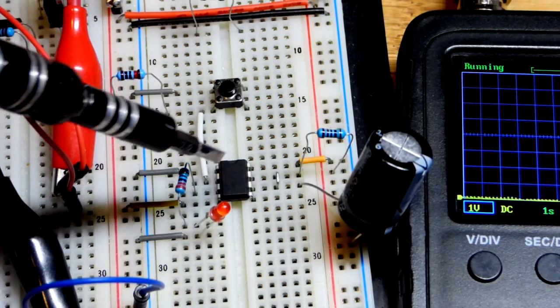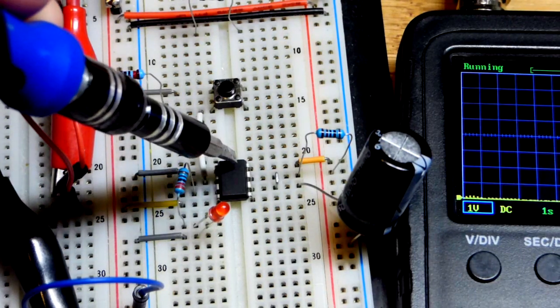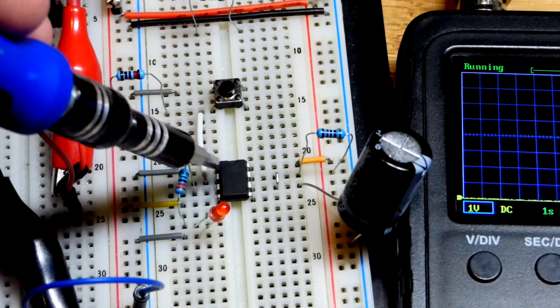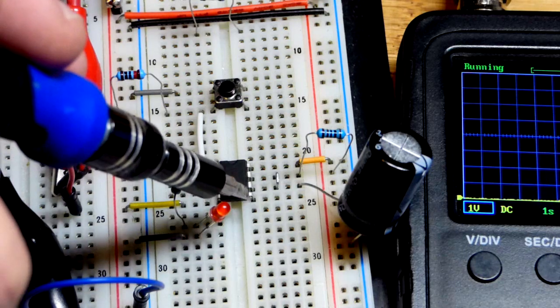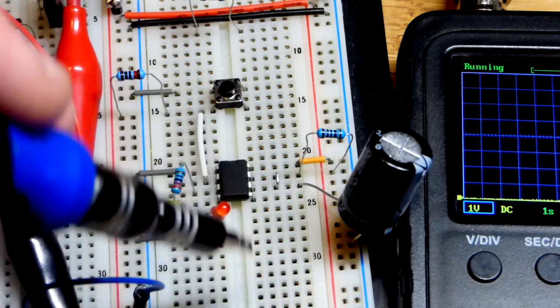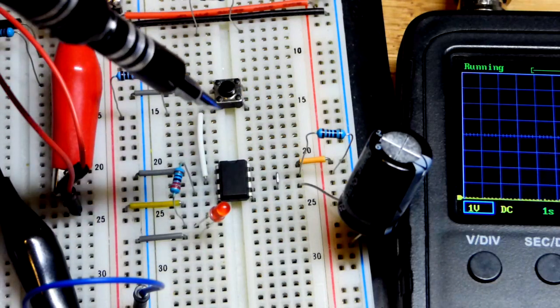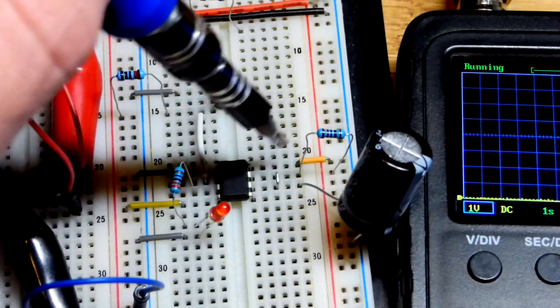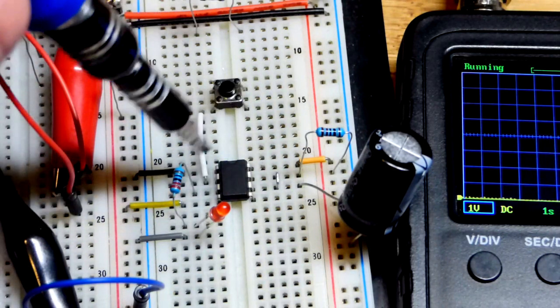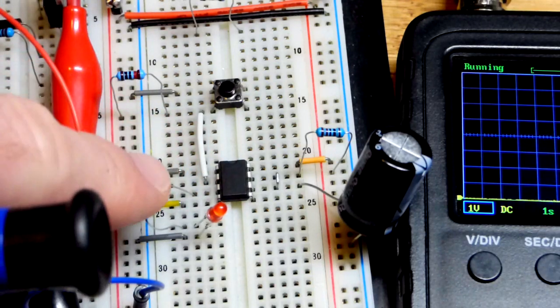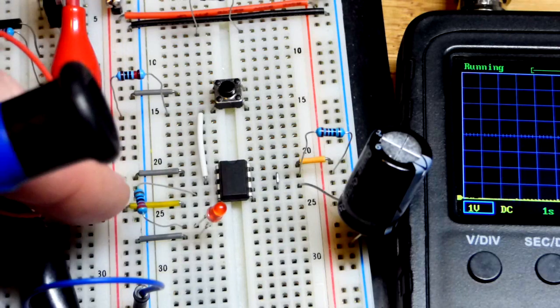Here we have the setup on the board. It's a 555 timer with a little notch up here. The numbering goes 1, 2, 3, 4, and then you go across 5, 6, 7, 8. For longer integrated circuits, you keep counting until you get to the bottom, jump across and go up. We have VCC, the positive supply to pin 8, and then pin 1 with the ground jumper going to ground.